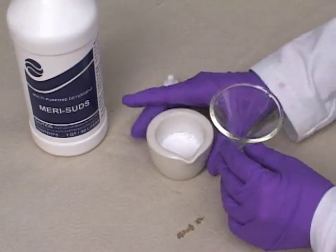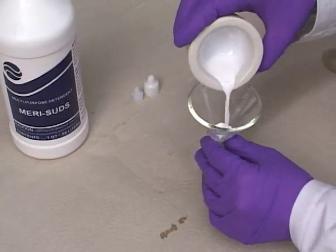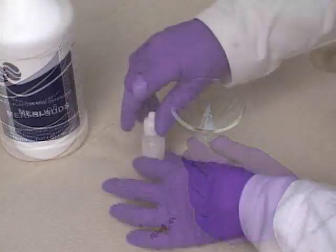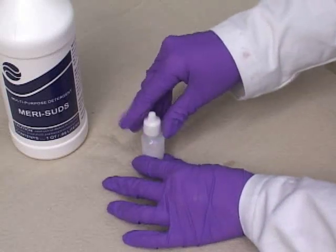Step 3. Use a funnel to pour the solution into the small dropper bottle. Leave the solution alone to equilibrate for at least 15 minutes.